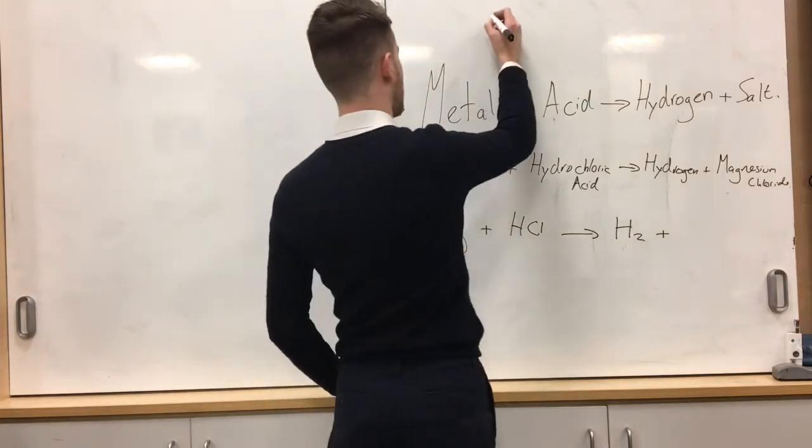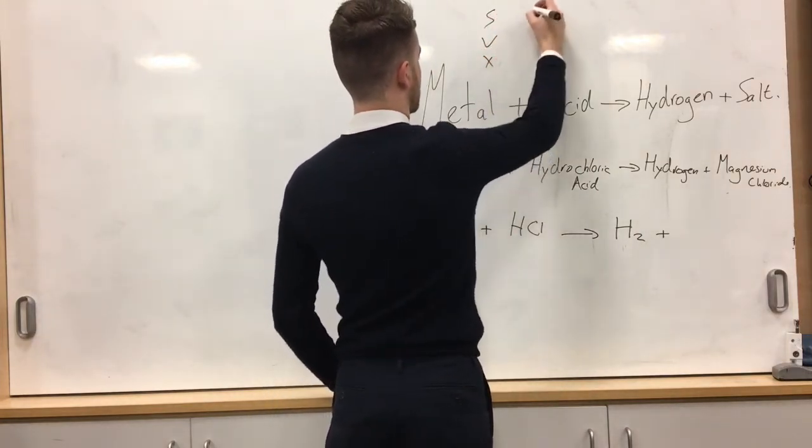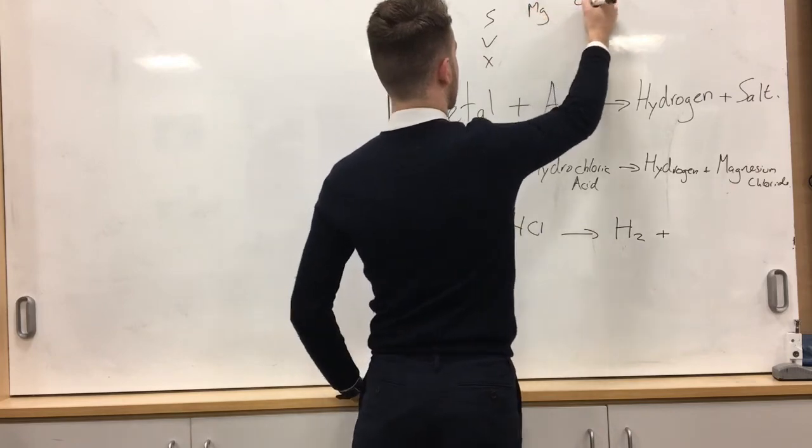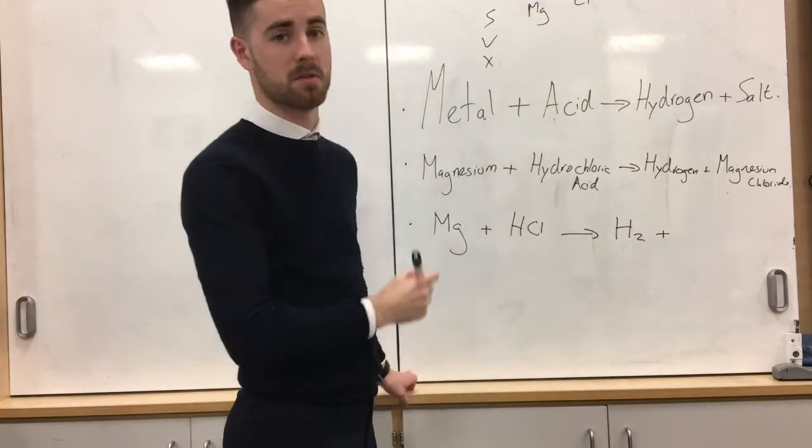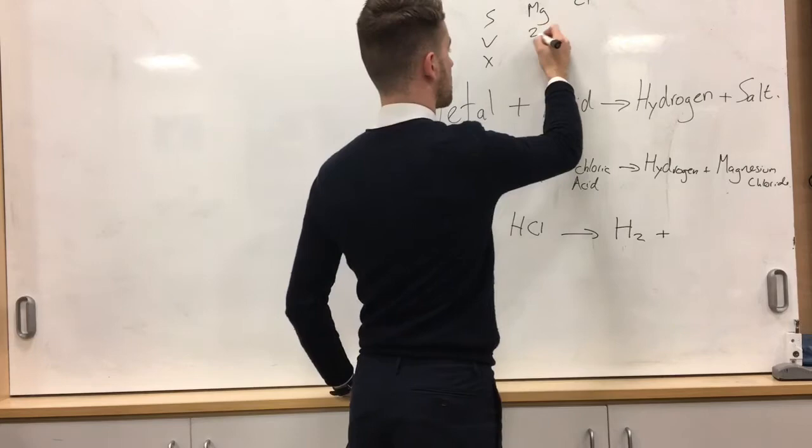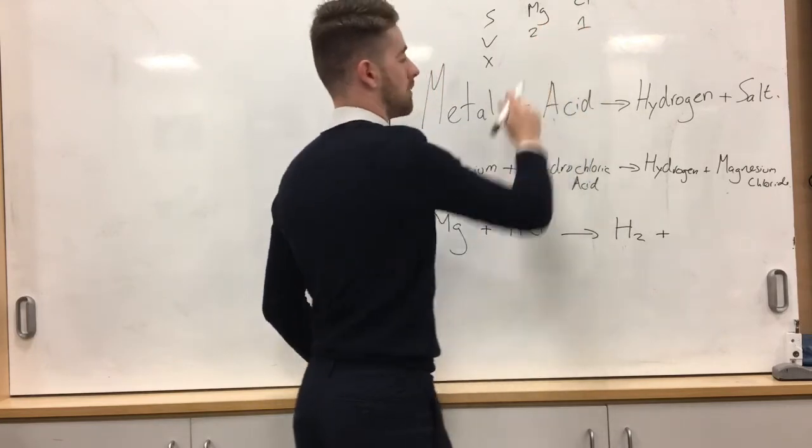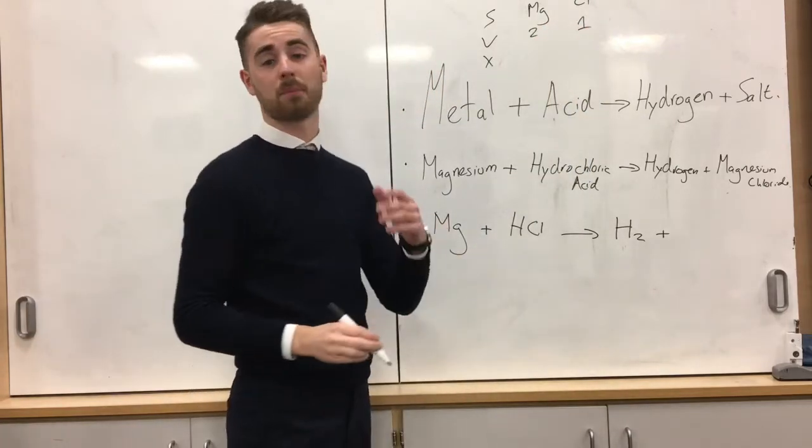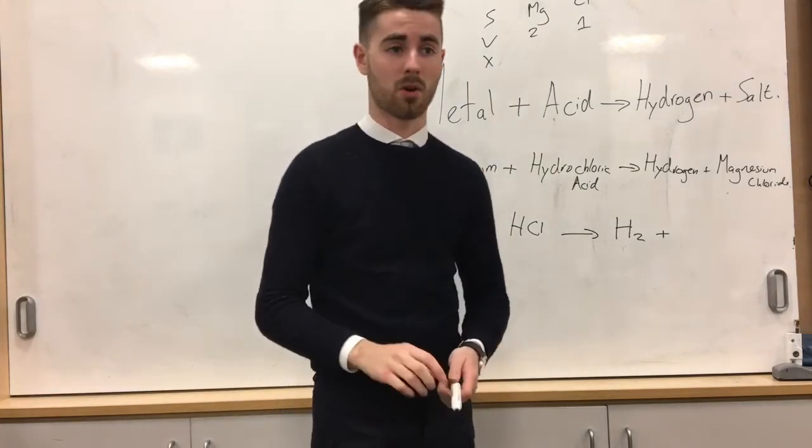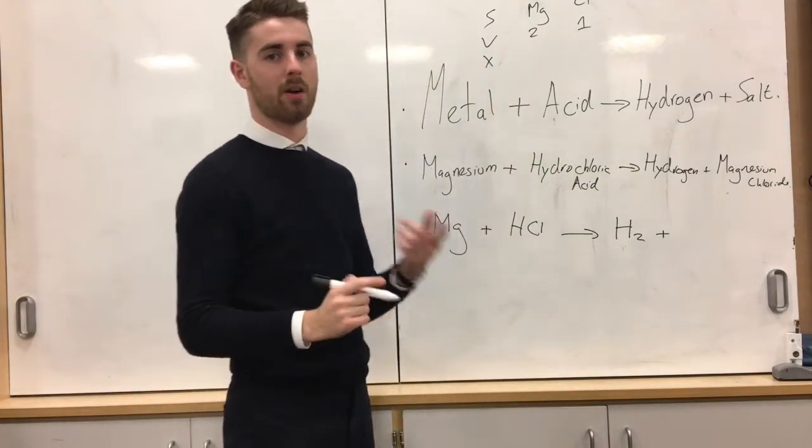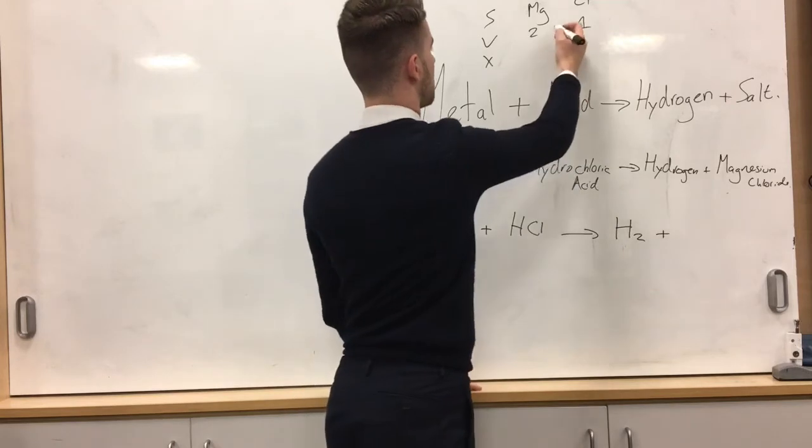Quick use of the SVX method. SVX. MgCl. Symbol of magnesium, symbol of chlorine. Valency 2, valency 1. Magnesium in group 2 means it's got a valency of 2. Chlorine in group 7 means it's got a valency of 1 due to having one unpaired electron. Crossover.